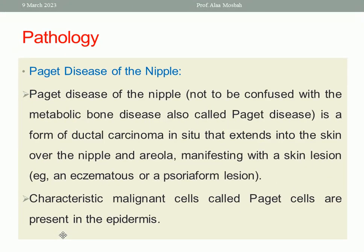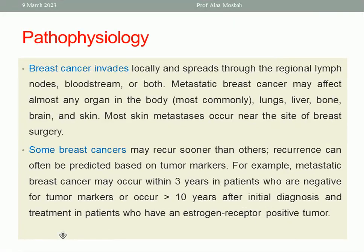Another special pathology is Paget's disease of the nipple — different from Paget's disease related to metabolic bone disease. This is a form of ductal carcinoma in situ that extends into the skin over the nipple and areola, manifesting with eczematous or psoriasiform skin lesion. The skin is scaly and inflamed. Characteristic malignant cells called Paget cells are present in the epidermis.